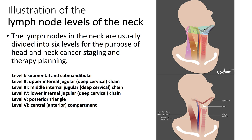Level 1 is the submental and submandibular. Level 2 is the upper internal jugular. Level 3 is the middle internal jugular. Level 4 is the lower internal jugular chain. Level 5 is the posterior triangle. And level 6 is the central anterior compartment.